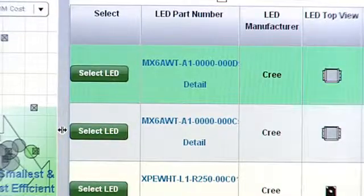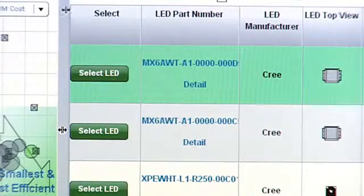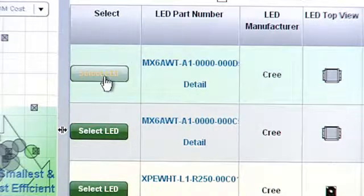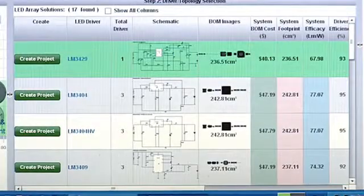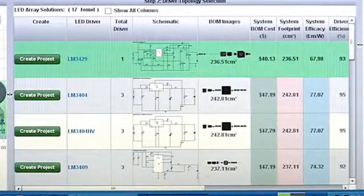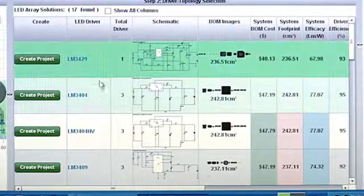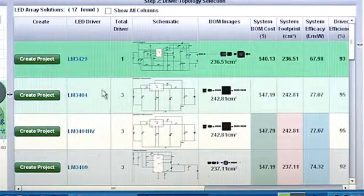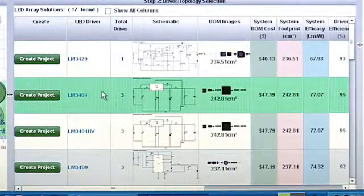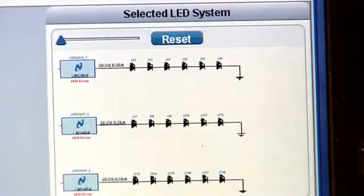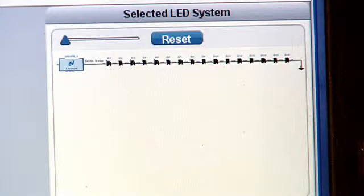So after reviewing your choices, you pick the desired LED array and heat sink, and then you click on the Select LED button, and you proceed to the driver selection page. Here we see a listing of appropriate LED drivers, including buck, boost, and buck-boost topologies, each of which has the LED array broken into appropriately sized series and parallel strings, which you can see on the block diagram here on the right.